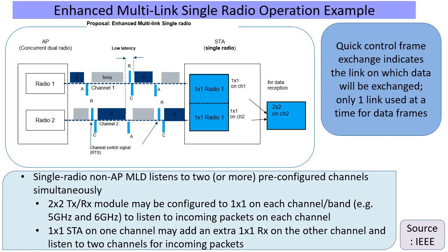Enhanced Multi-link Single Radio is a client-side option in Wi-Fi 7, primarily to reduce the burden of complexity on the client side which wants to use MLO without jacking up the complexity too much. As you might know, most of the data-guzzling Wi-Fi clients have settled in on a 2x2 radio, and when it comes to multi-link operation, falling back to 1x1 on two links for data doesn't appear to be too attractive. Having two sections of 2x2 is also not very attractive from the complexity point of view.